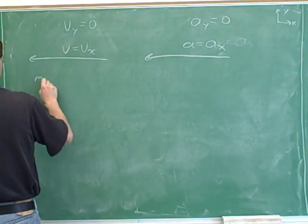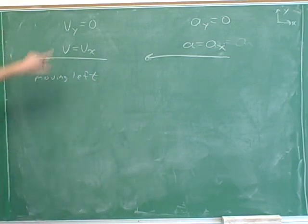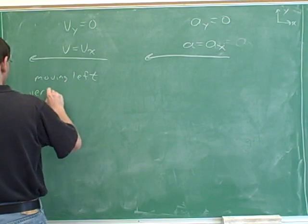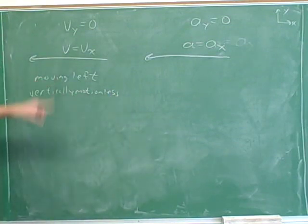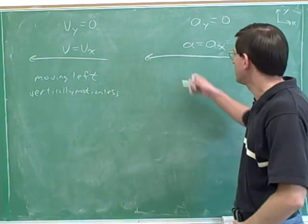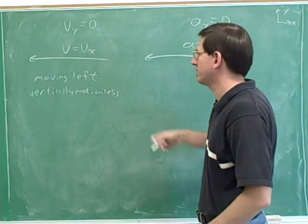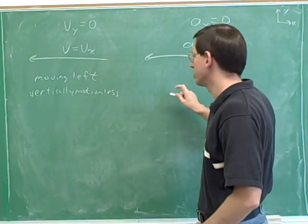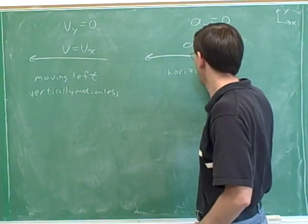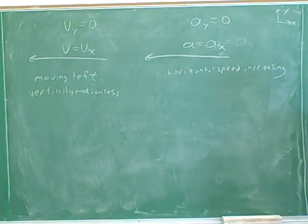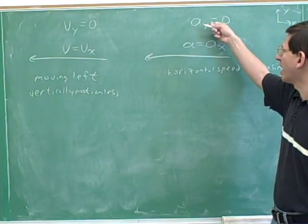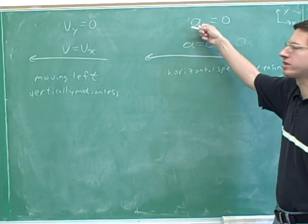So what do we know about horizontal motion? We know that we're moving left. The vertical velocity is 0, so vertically we're motionless. We're moving to the left but not moving up or down — moving horizontally but not vertically. The x acceleration is parallel to the x velocity, so our horizontal speed is increasing. A sub x is parallel to v sub x, so our horizontal speed is increasing.